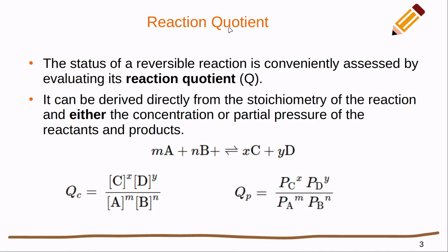The reaction quotient is a mathematical tool that allows us to assess how far a reversible reaction is away from its equilibrium point. It gives us a number to assess where we are as we approach equilibrium. It can be derived directly from the stoichiometry of the reaction, and we can use either concentrations or partial pressures. For a generic equation, the reaction quotient is always products over reactants — the product of the product concentrations in the numerator, with stoichiometric coefficients as exponents.